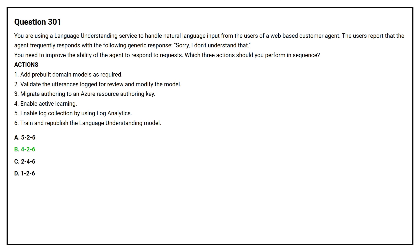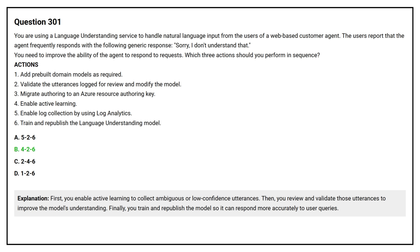The correct answer is Option B: 4, 2, 6. First, you enable active learning to collect ambiguous or low-confidence utterances. Then, you review and validate those utterances to improve the model's understanding. Finally, you train and republish the model so it can respond more accurately to user queries.